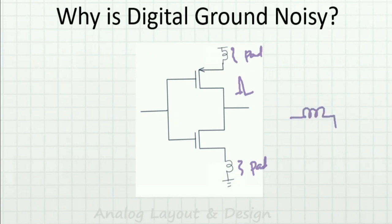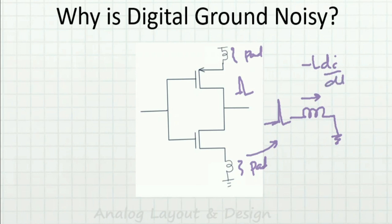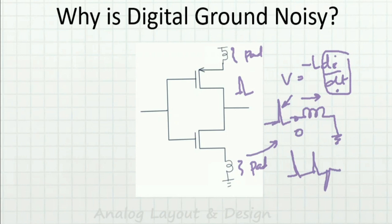With a large current changing in very little time through that parasitic inductance, the voltage across the inductor is minus L·di/dt. Because di/dt is very large, this inductance causes the ground to bounce — the ground node, which was at zero, will now oscillate. This is why you get noise on the ground, and the same effect applies to VDD. Please watch the ground bounce video for a detailed explanation.